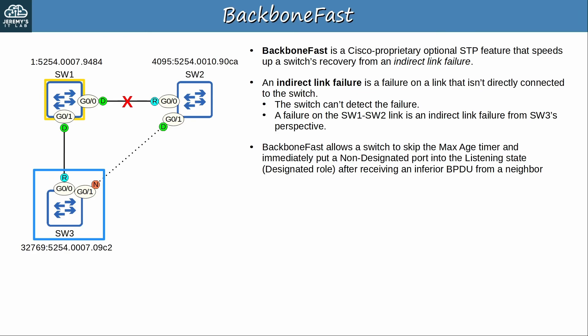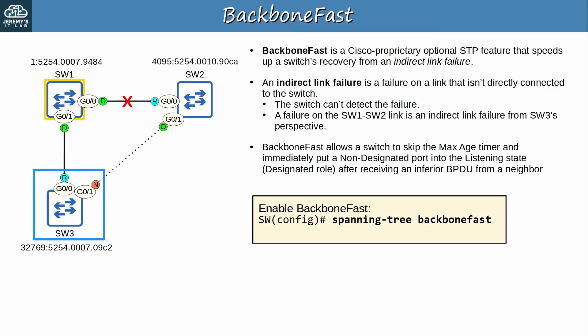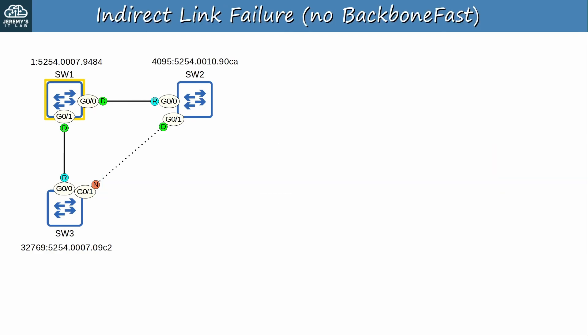I'll demonstrate exactly how that works soon. Enabling BackboneFast is simple — the command is 'spanning-tree backbonefast'. But unlike UplinkFast, you should enable it on all switches in the LAN; it won't work if you only enable it on SW3, for example. To understand the benefit of BackboneFast, let's review what happens without it.